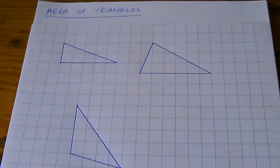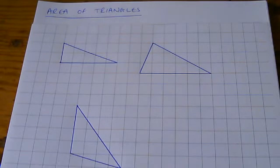I've got three triangles drawn on centimeter squared paper here, and I'm going to look at, starting with the easiest version, how you can calculate the number of centimeters squared which are inside the shape.